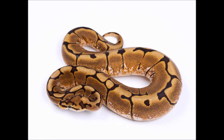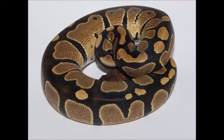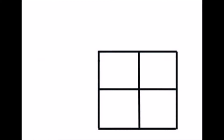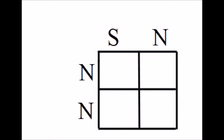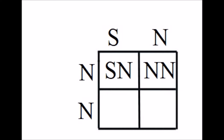This is a spider ball python — it's a very common type of dominant morph. Now let's say we want to breed this to a normal ball python. Here are our general types, and here's our Punnett square just like last time. We can lay out our general types across the Punnett square and then carry the letters across.